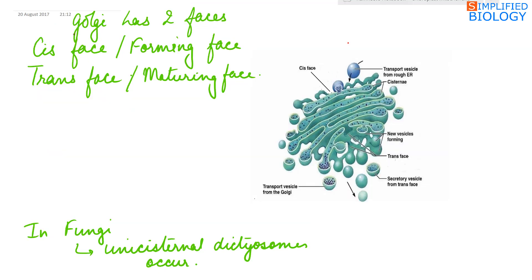Golgi complex has two phases, cis phase and trans phase. Cis phase is the forming phase where new cisternae are formed by the fusion of vesicles produced by the endoplasmic reticulum. So the convex side of the Golgi complex is the cis phase where vesicles produced by the endoplasmic reticulum fuse with the cisternae of the Golgi complex.